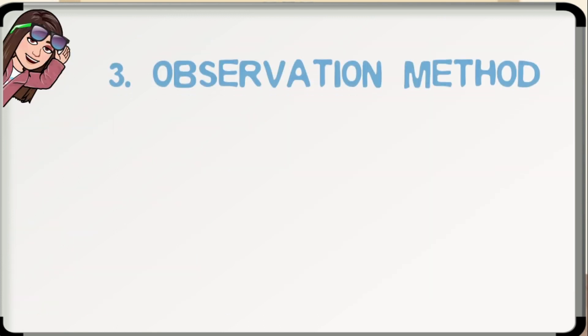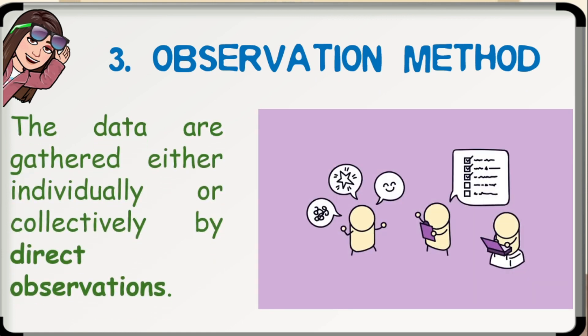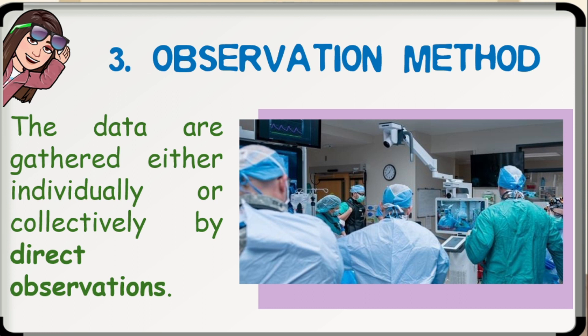Number three, observation method. The data are gathered either individually or collectively by direct observations. The person who gathers data is called the investigator, while the person being observed is called the subject. This method is used by psychologists, sociologists, and psychiatrists. Example: in time of COVID-19 pandemic, researchers obtained data by observing behaviors of patients.